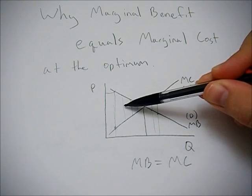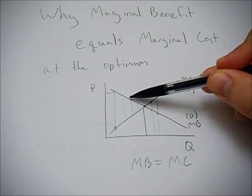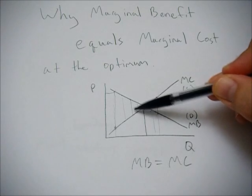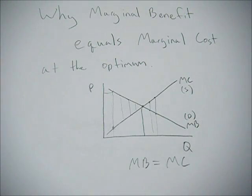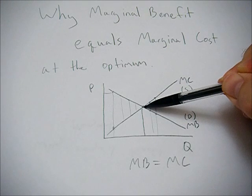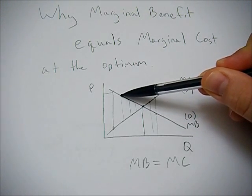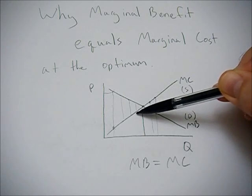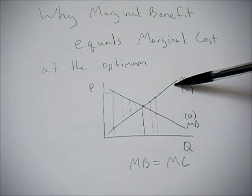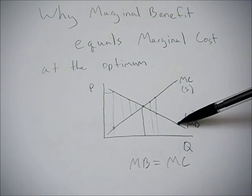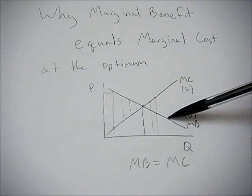So starting at marginal benefit equals marginal cost, if you're anywhere to the left, you're giving up potential gains because marginal benefits are greater than marginal cost. If you're anywhere to the right, then you're losing because your costs are greater than benefits and you'd be better off by consuming less.